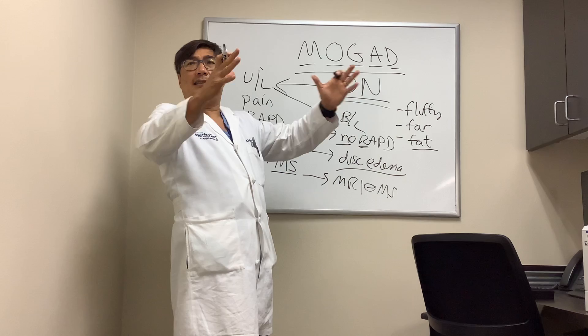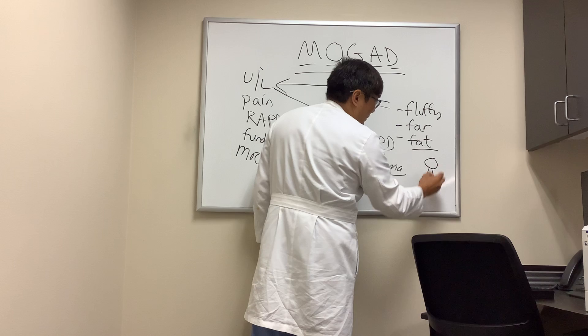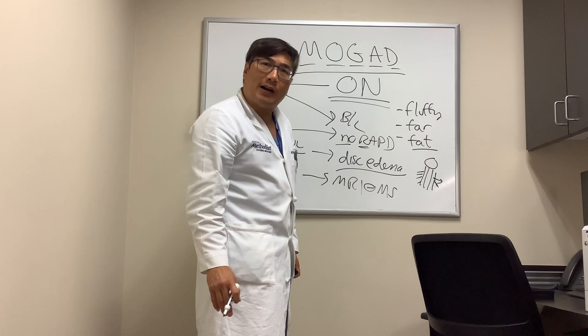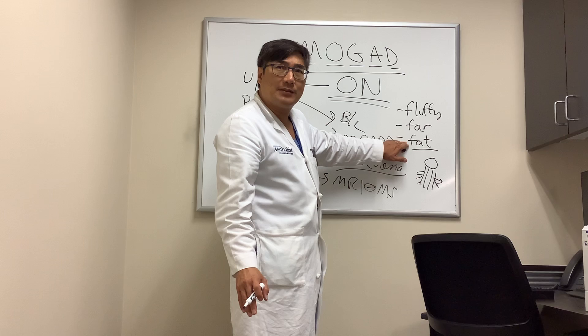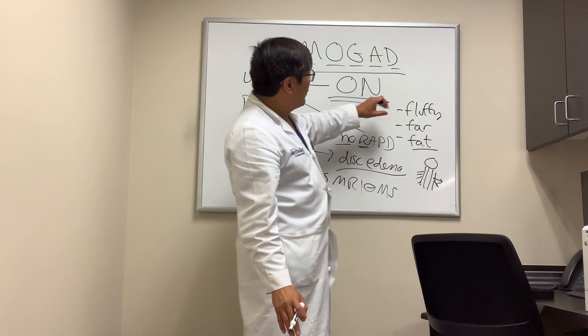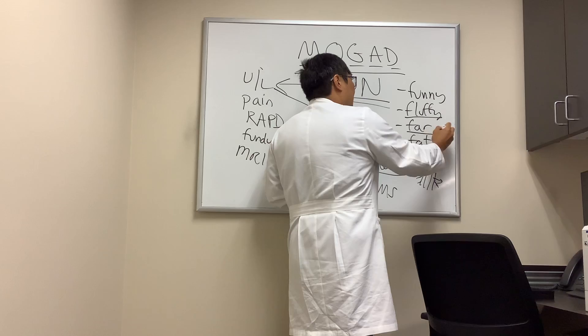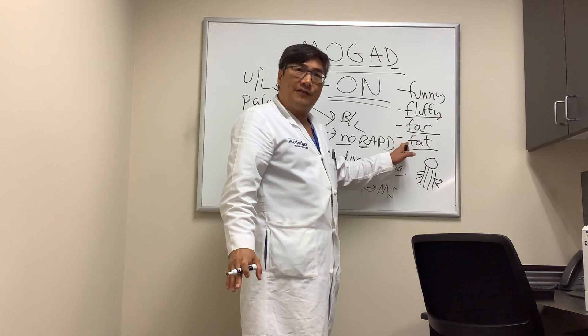If we see involvement of the fat surrounding the nerve, that is a sign that the inflammatory process is not confined to the myelin itself but extends outside. On fat-suppressed post-contrast T1 MRI of the orbit, we may see sheath enhancement or fat involvement — optic perineuritis. So if we see fluffy confluent lesions, longitudinally extensive involvement along the optic nerve or spine, or fat and sheath involvement, that is when you should be thinking about MOG in patients with optic neuritis.